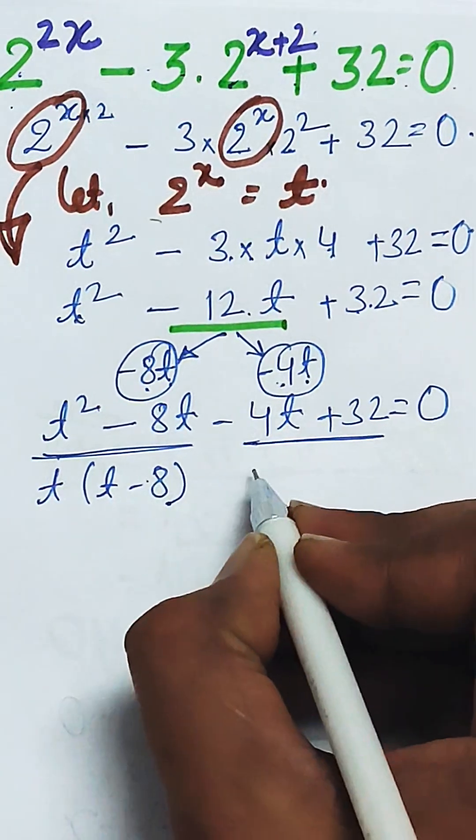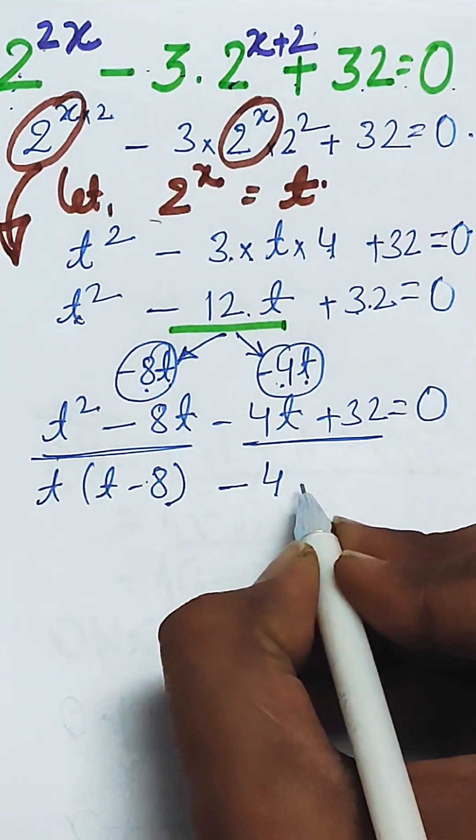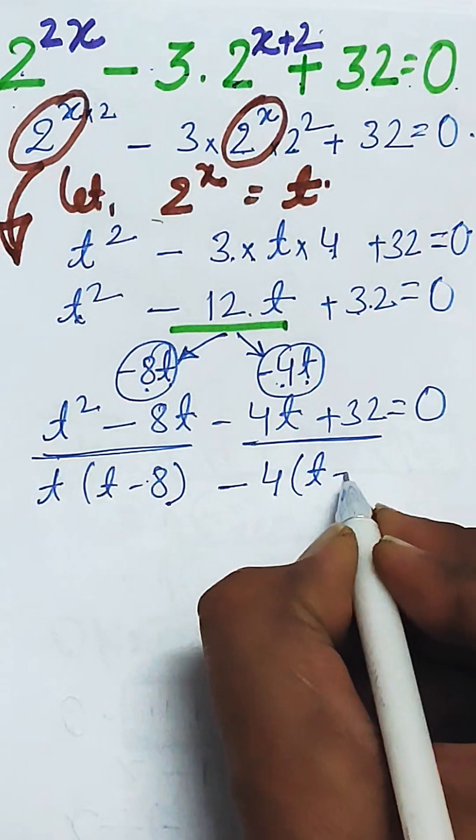When t is common from the first two, it will be like this. And when minus 4 will be taken as common, it will be t minus 8.